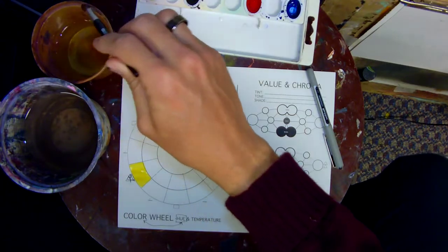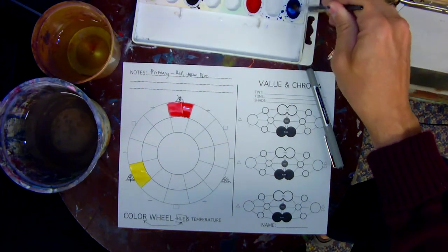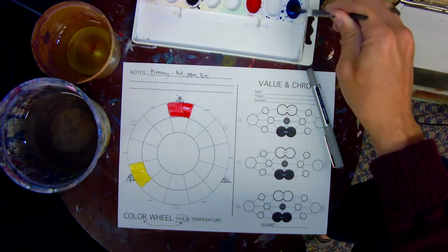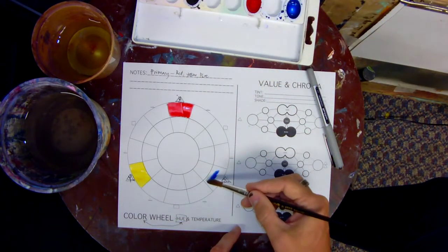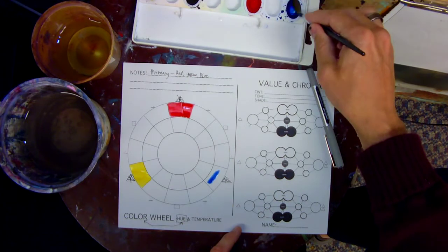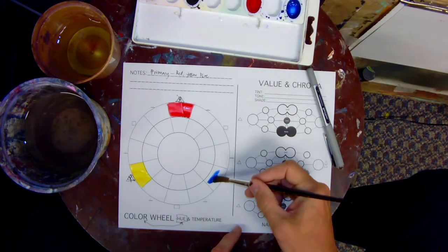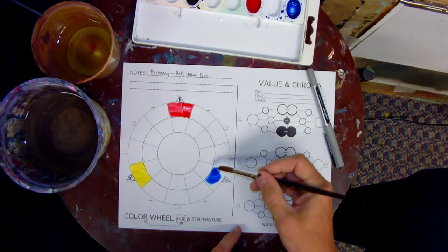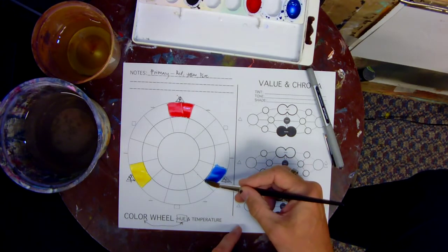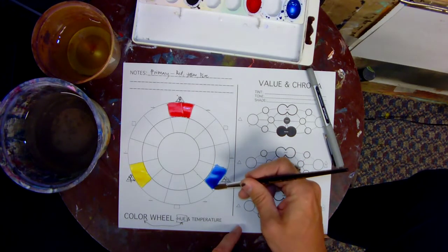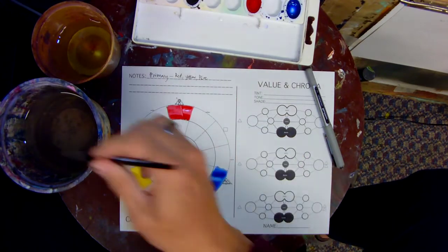So this is real quick showing you how to do this. Start with your primaries. We're only going to use red, yellow, and blue as you see from my palette today to complete this. I do want strong color though, as much as possible. I don't want it to be real thin.